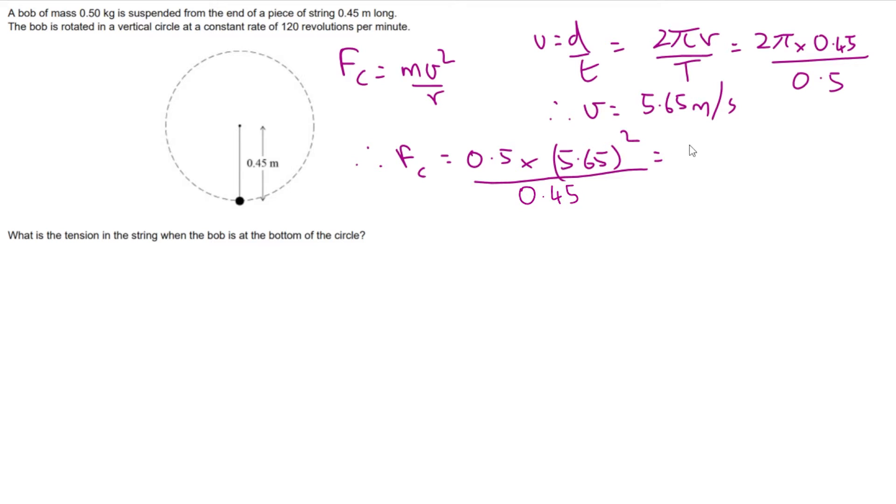When you calculate that you get 35.5 which we could call 36 to two significant figures newtons. It's at this point that some students will optimistically jump up and down with joy because they notice 36 is one of the answers, but it isn't the correct one. This is because you have forgotten to take account of the tension in the string that's caused by the weight of the bob.